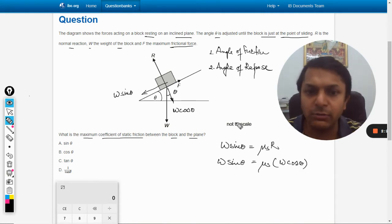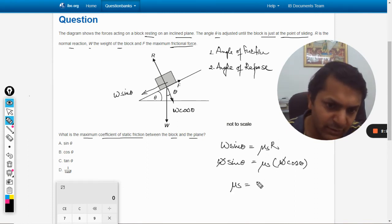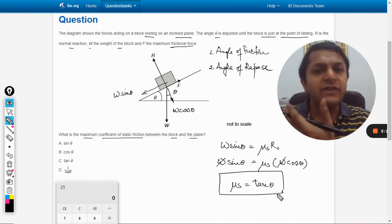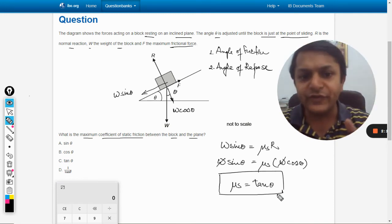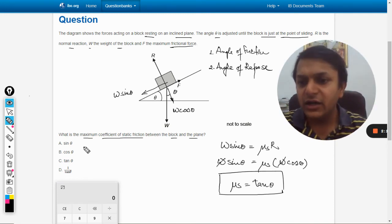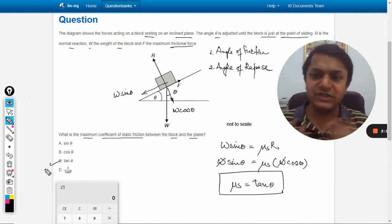μs times normal reaction equals W cos theta, and this is W sin theta. From here, W cancels with W, so μs comes out to be equal to tan theta. This is exactly the result we find in the theory of angle of repose and angle of friction. We have option C as the correct answer.